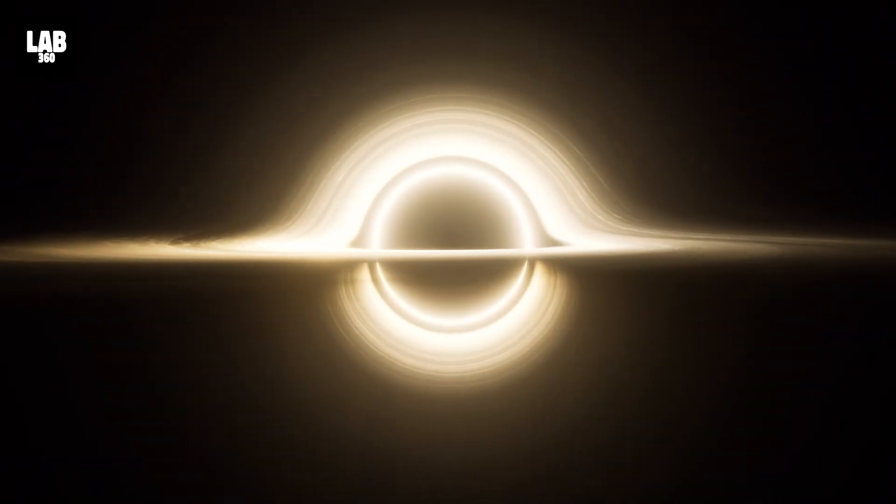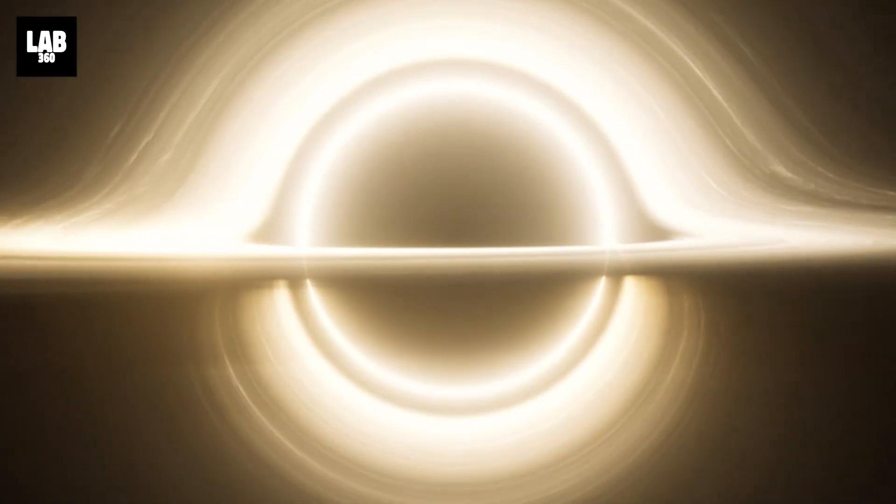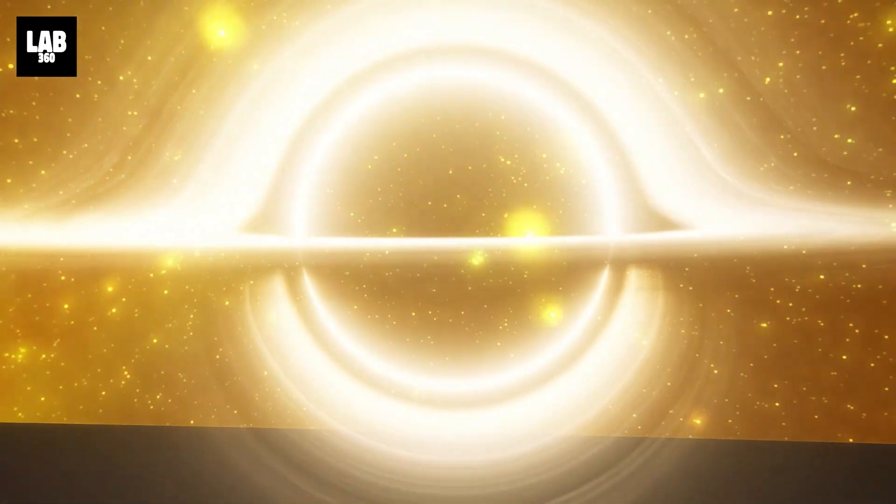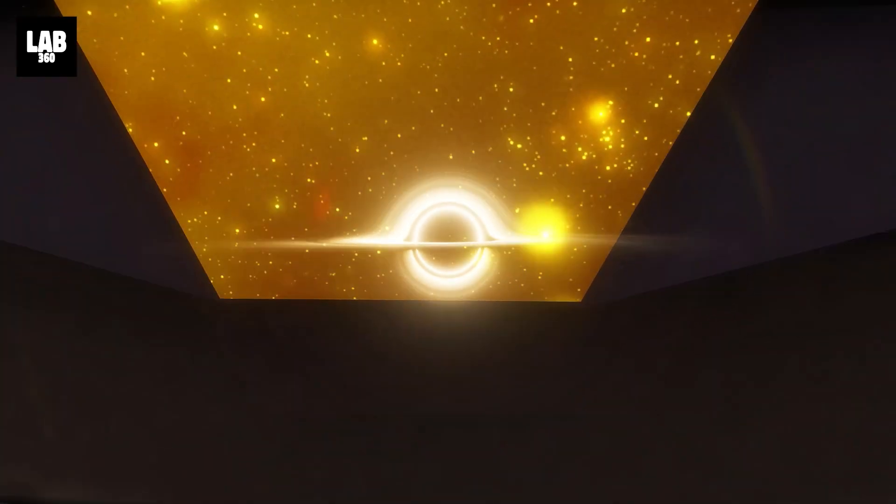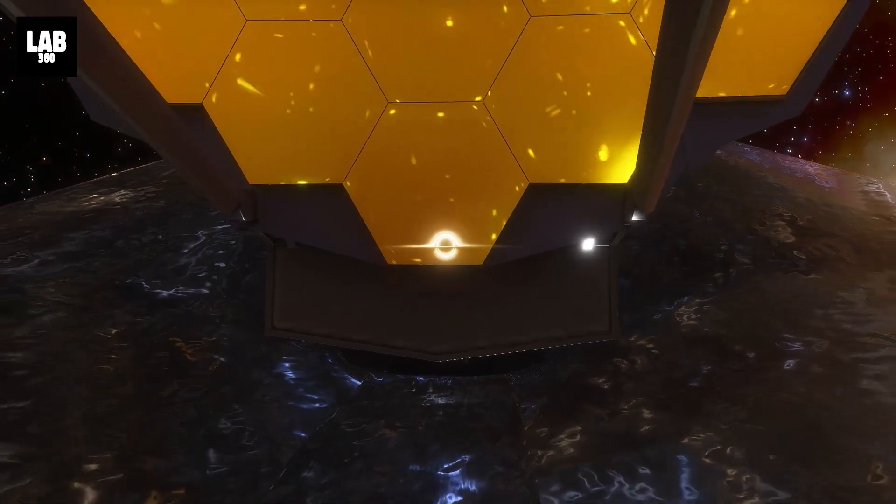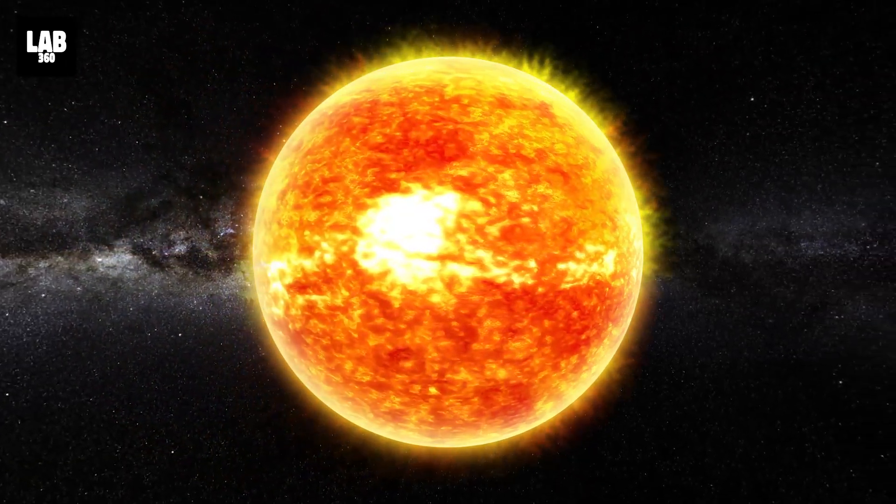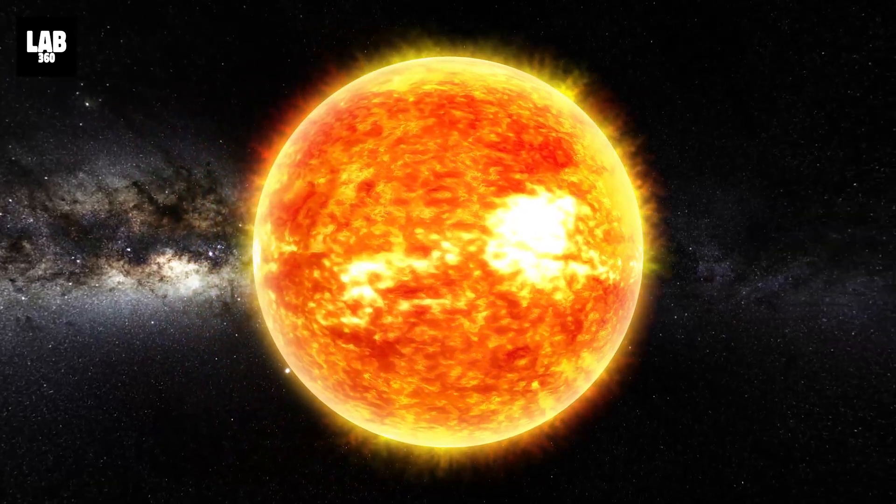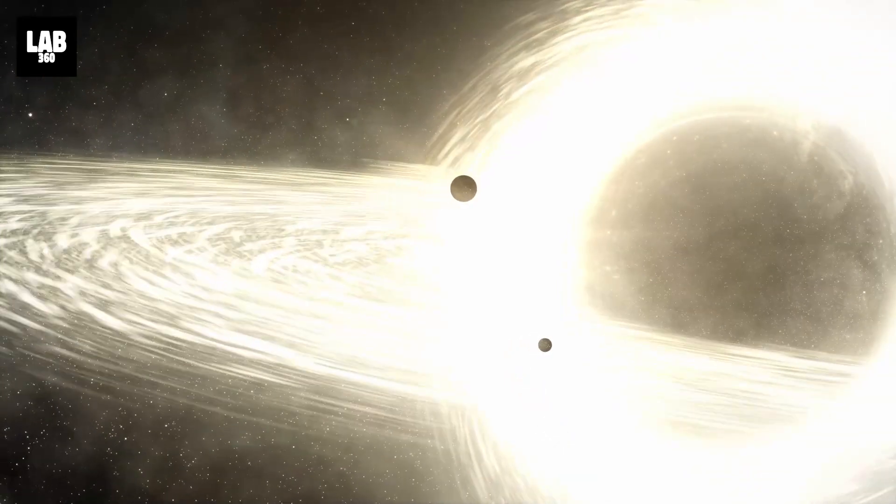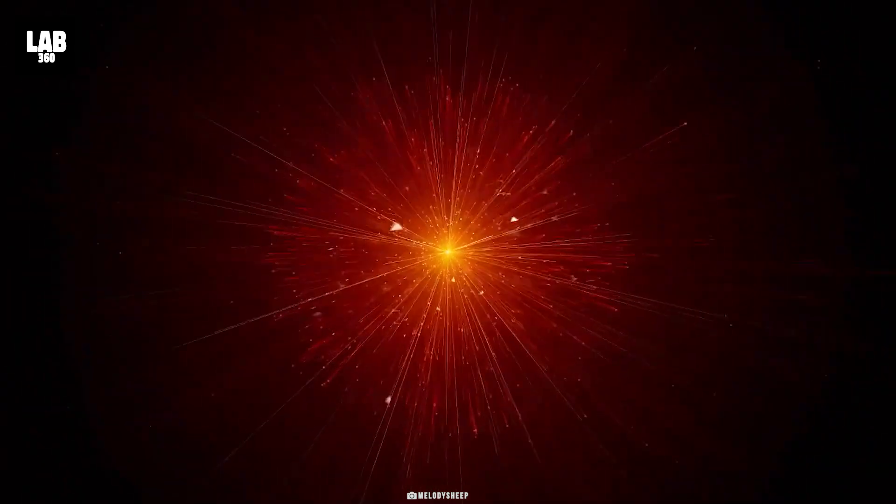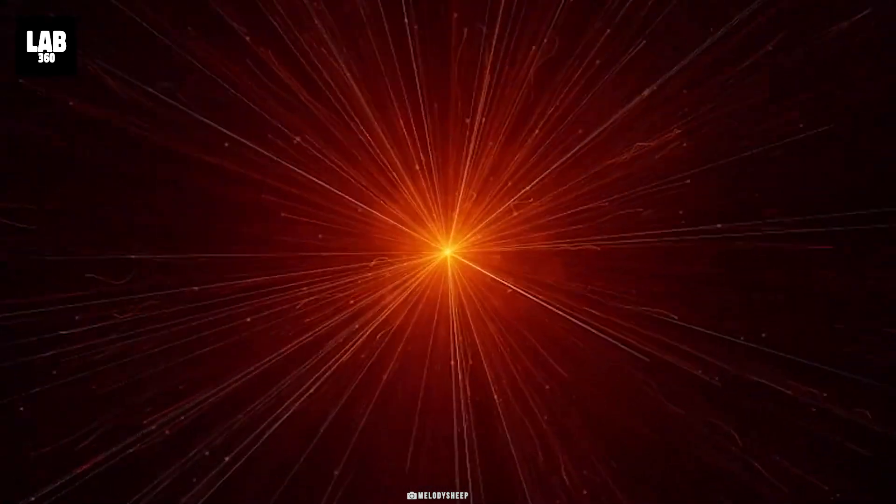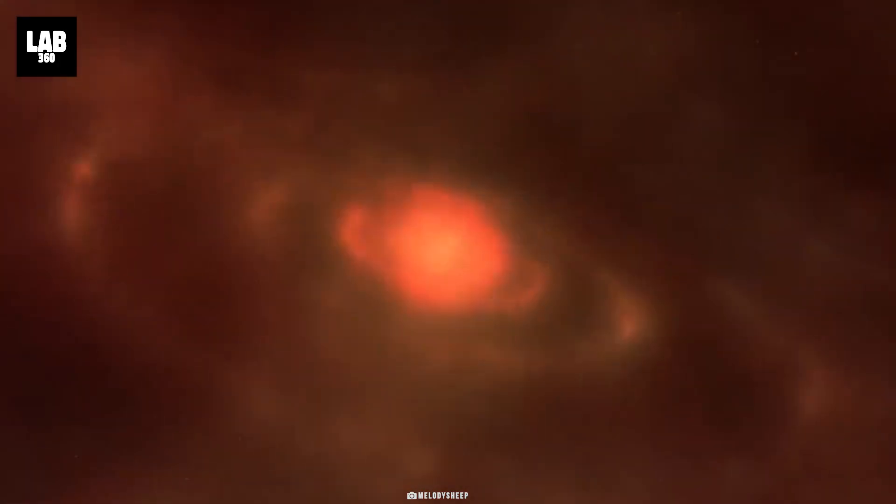Scientists have discovered what they believe to be the oldest known black hole in the universe, owing to the telescope's ultra-powerful sensors that captured this elusive entity. This supermassive black hole, which dwarfs our sun by a staggering 10 million times, existed at the center of a galaxy 570 million years after the universe's inception, a time so remote it's difficult to fathom. To put it in perspective, the universe itself is estimated to be 13.7 billion years old.